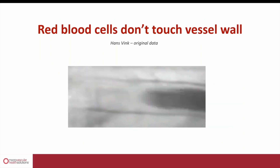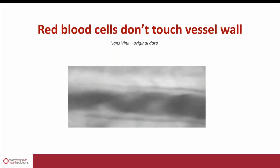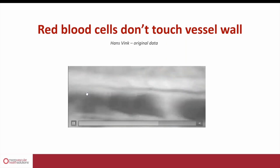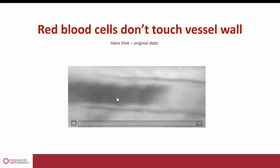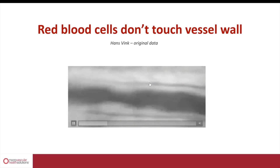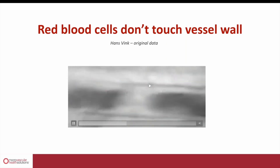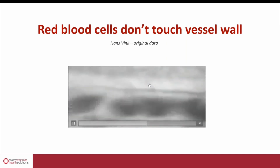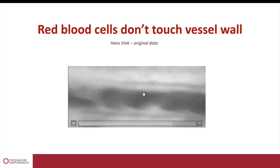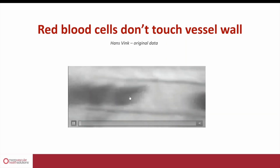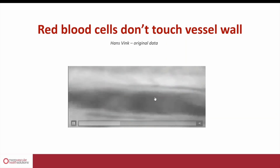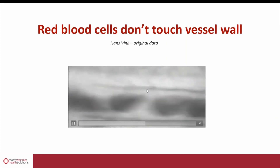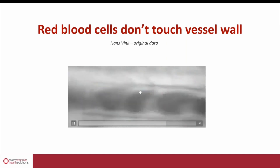And if we zoom in with a big microscope on an individual capillary, you realize that red cells are flowing through one by one, but they never touch the surface of the vessel wall. There is a big gap between the compartment in the center where the red cells are flowing and the luminal surface of the endothelium.